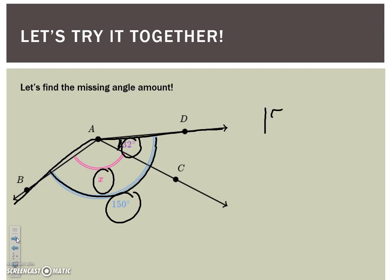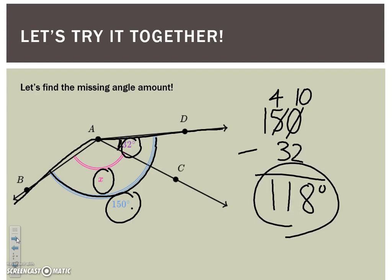So again, we're going to subtract. We're using the total that we do know, which is 150 degrees. The piece that we know is 32 degrees, and we're going to subtract to find our missing piece. 0 minus 2, I can't do, I have to borrow. 10 minus 2 is 8, 4 minus 3 is 1. Bring your 1 down. 118 degrees is our missing angle piece.